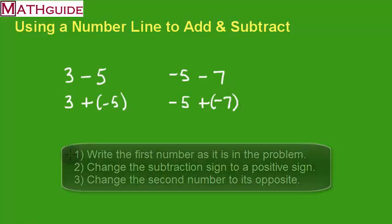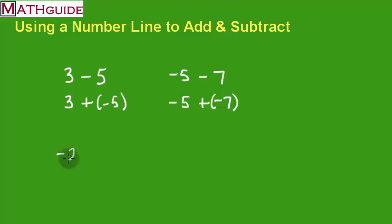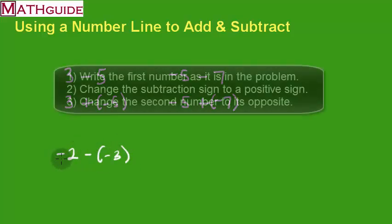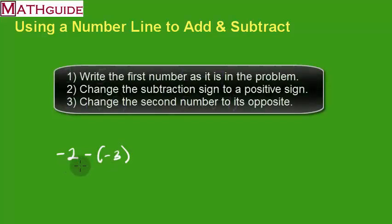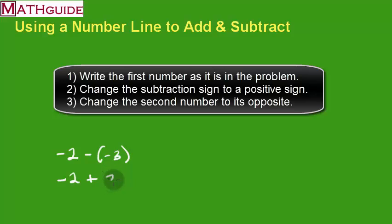It works for all situations. Let's say we have negative two minus negative three. Again, you leave the first number alone, change the problem to addition, and then just take the opposite of the second number. So the opposite of negative three is positive three. And now you would do that problem like normal.